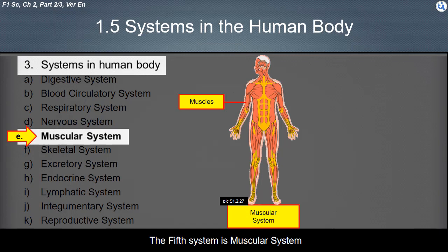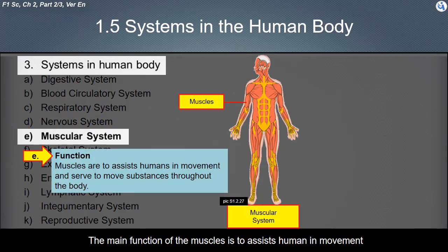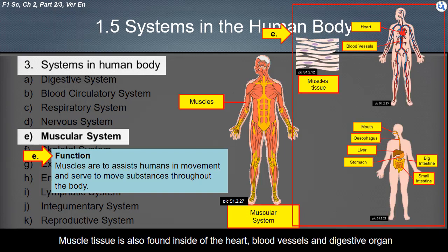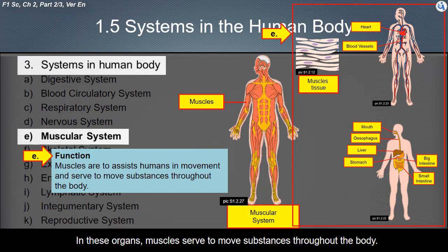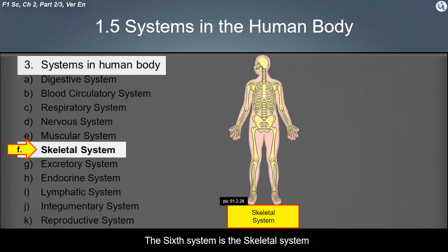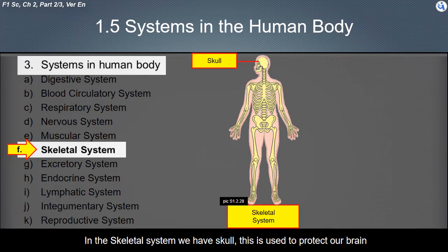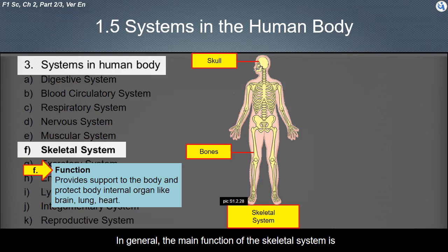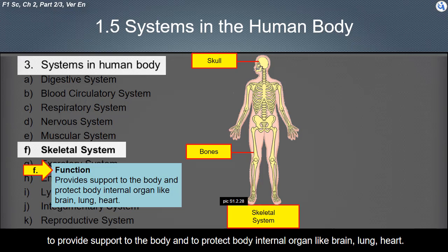The fifth system is the muscular system. The main function of the muscles is to assist humans in movement. Muscles are attached to the bones of the skeletal system and make up roughly half of a person's body weight. Muscle tissue is also found inside the heart, blood vessels, and digestive organs, where muscles serve to move substances throughout the body. The sixth system is the skeletal system. We have a skull to protect our brain, and bones to give support to our body. The main function of the skeletal system is to provide support to the body and to protect internal organs like the brain, lung, and heart.